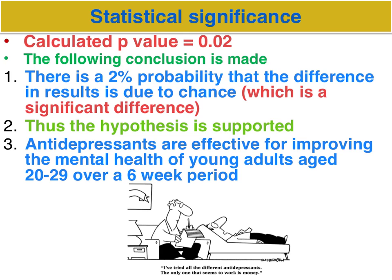So, we state that there is a 2% probability that the difference between the control and experimental group is due to chance factors. This is a significant result, which means we support our hypothesis. Thus, we conclude that in this case antidepressants are more effective than placebo in improving the mental health of young adults aged between 20 to 29 over that six-week span.